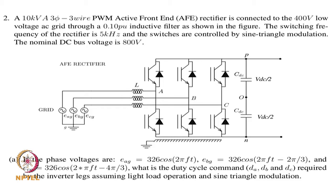Welcome to class 38 in Topics in Power Electronics and Distributed Generation. In the last class, we have been looking at an example of a 10 kVA 3-phase inverter at 400 volts AC connected to the grid through a filter inductance, and we are looking at different aspects of the problem.